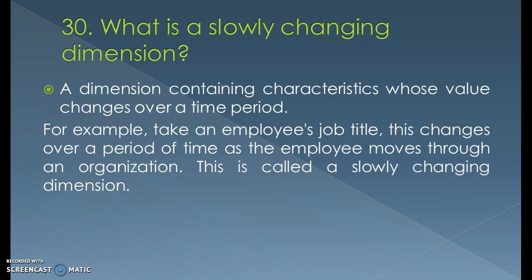What is a slow changing dimension? A dimension containing characteristics whose value changes over time periods. For example, take an employee's job title — this changes over a period of time as an employee moves through an organization. This is called a slow changing dimension.